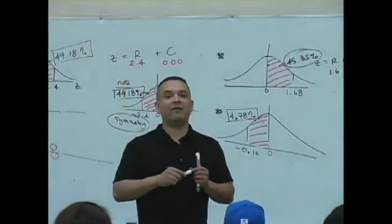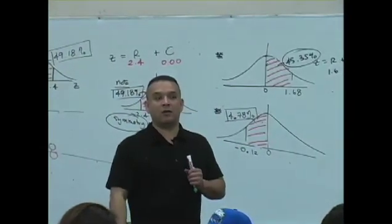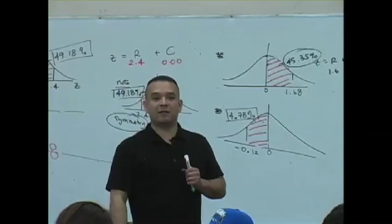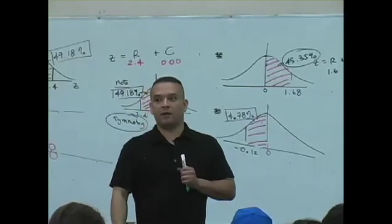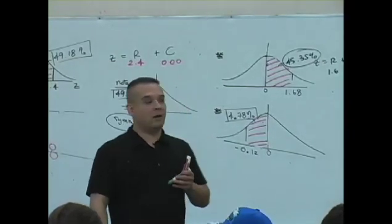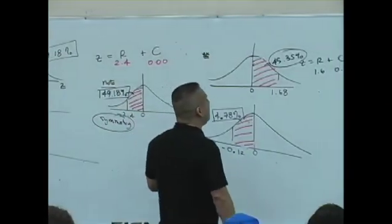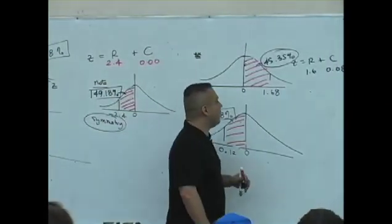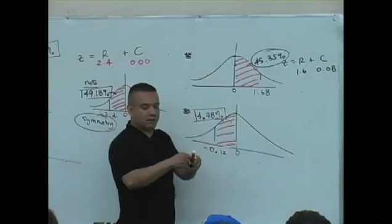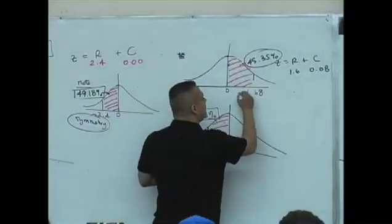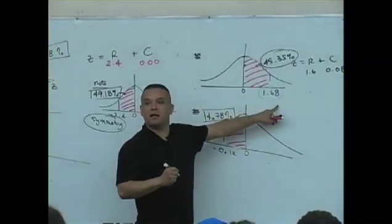All right. Anybody have any questions? You guys sure about this? How did I get the 0.08? What's the Z value? See this? It's 1.68.